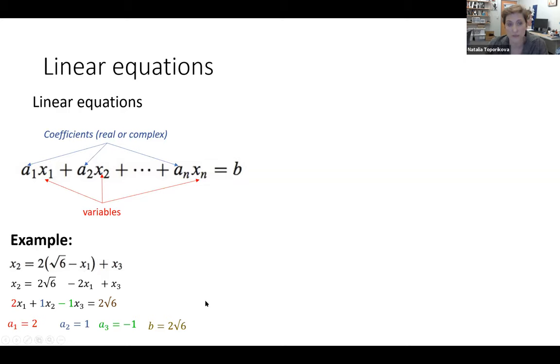One linear equation is not always useful. Most often, scientists try to solve a system of equations, which is just basically two, three, four, as many linear equations as you want which have a common solution. For example, here is a system of two linear equations with two variables which you're pretty familiar with from pre-calculus or any other math course.